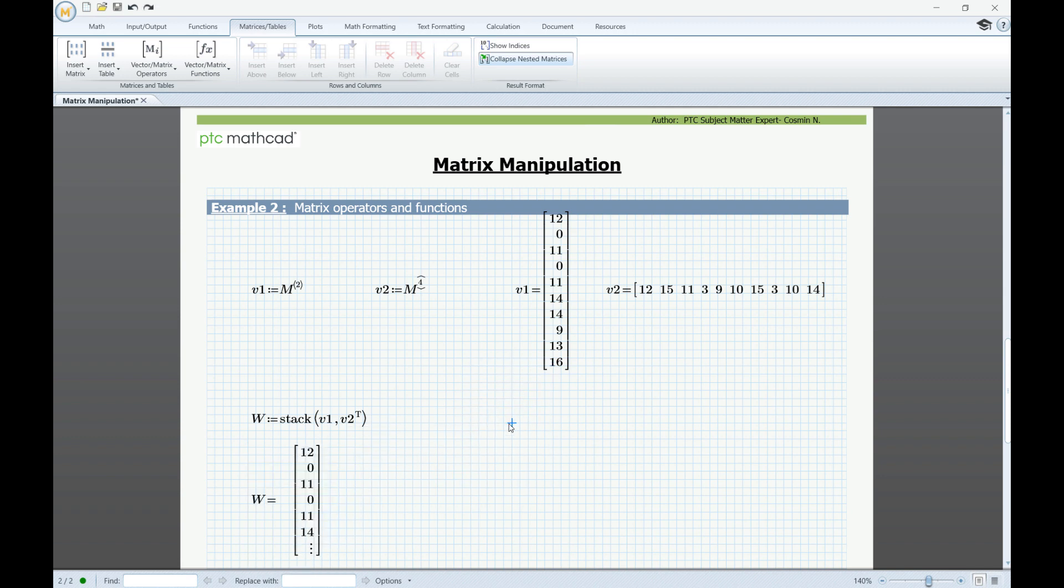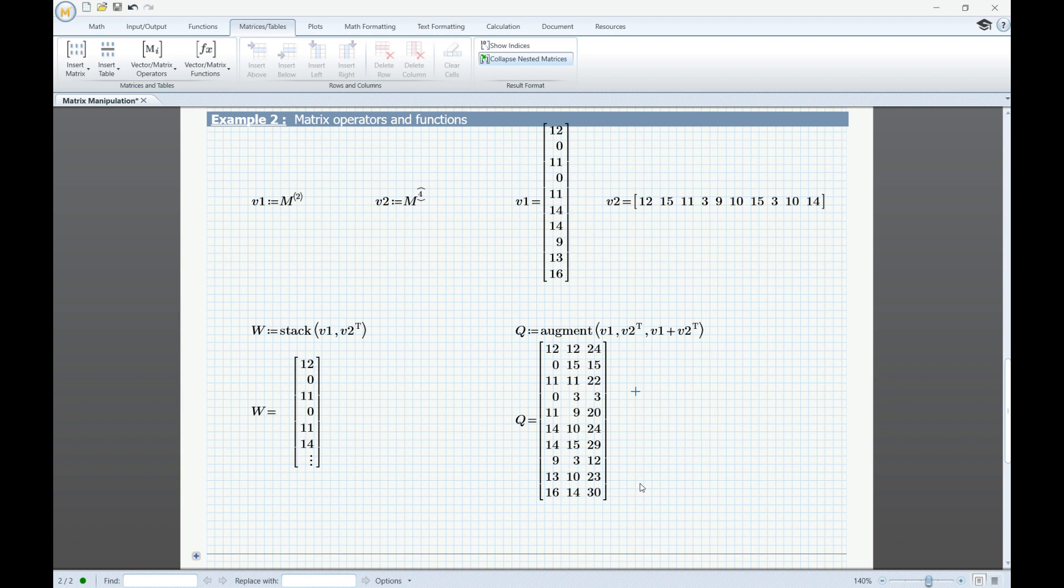For the second case, I'm going to create a new variable called q, but this time I'm going to use the augment function. And as arguments to the function, I'm going to pass v1, v2 transposed like we did for the previous one, and we're going to put in another argument that will be v1 plus v2 transposed. If we evaluate q, we will get a three column matrix containing the values of v1 and v2 as well as the sum of the two vectors.